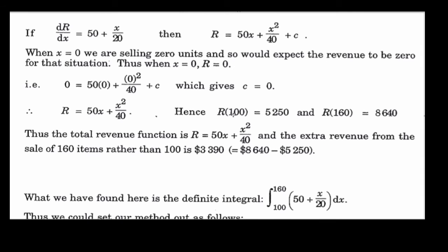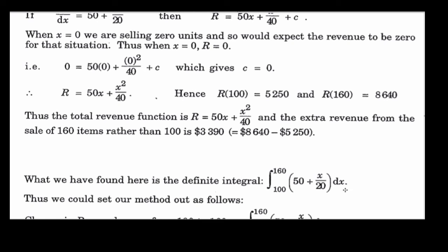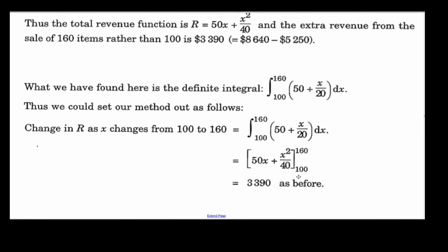After selling 100 units, revenue is $5,250; after 160 units, revenue is $8,640. The extra revenue from selling 160 items rather than 100 is $3,390. This is also an application of definite integration — we can compute the difference as the definite integral of the marginal revenue function from 100 to 160, which represents the area under that curve, also giving $3,390.